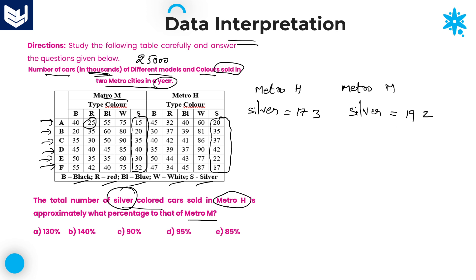Now the question is: 173 (Metro H) is approximately what percentage of 192 (Metro M)? You need to calculate 173 divided by 192 into 100. Taking round figures: 170 over 190, zeros cancel. If you take the denominator as 20, 25 times 1750 gives 85. But the denominator is 19, not 20, so you will get a value of 5-point-something.